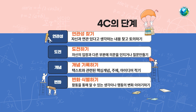4C 사고 기법의 단계는 자신의 경험과 관련 지어보는 연관성 찾기 단계, 새로운 관점에 대한 질문을 해보는 도전하기 단계, 텍스트에 있는 개념을 찾아보는 개념 기록하기 단계, 그리고 활동을 통해 변화된 생각이나 행동을 이야기하는 변화 식별하기 단계가 있습니다.